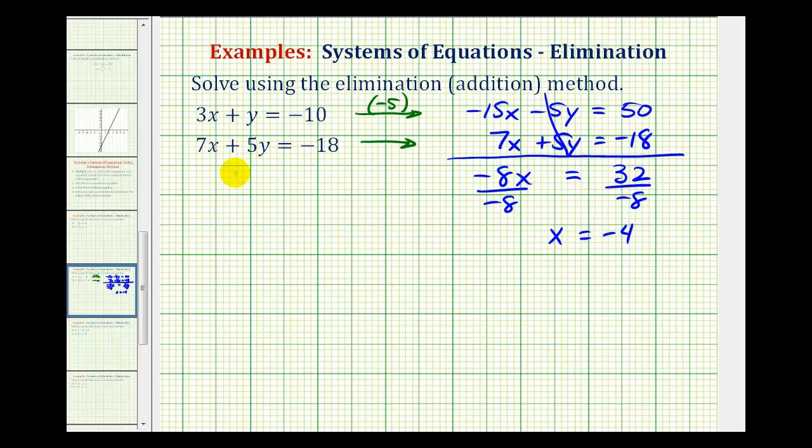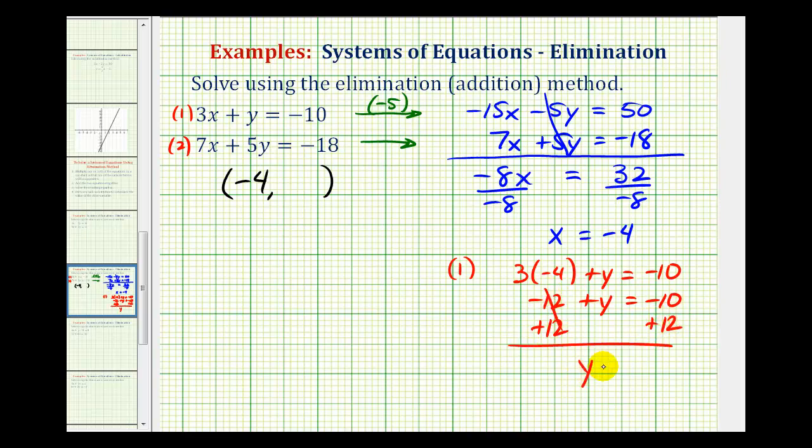We're not done though because remember the solution is an ordered pair. We know x equals negative 4. Now we have to perform substitution into equation 1 or equation 2 and then solve for y. Let's go ahead and use equation 1 and substitute negative 4 for x. We would have 3 times negative 4 plus y equals negative 10. This would be negative 12 plus y equals negative 10. So we'd add 12 to both sides. And here we have y equals positive 2. So our solution is x equals negative 4 and y equals 2.